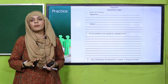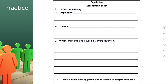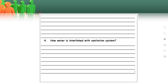Ye aapka ek test hai, taakay aapko evaluate kiya jaye. So: define the following — Population, Census. Which problems are caused by overpopulation? Overpopulation se kaun kaun si problems cause hoti hain — you have to write briefly here. Why is the distribution of population uneven in Punjab province? Iska jawaab aap in lines mein likhenge. Question number four: how is water interlinked with the sanitation system? You have to pause the video and complete the worksheet.